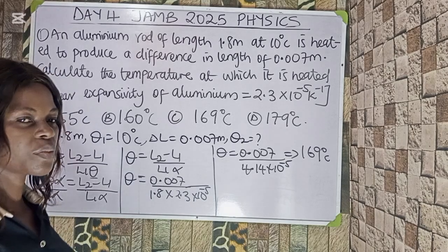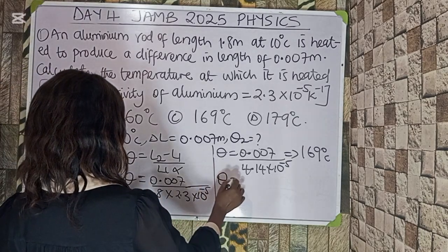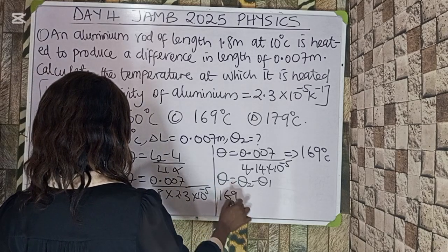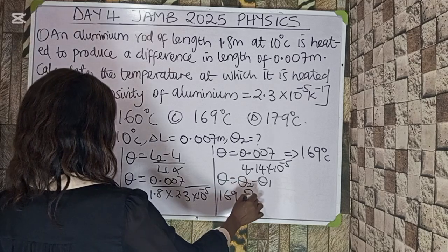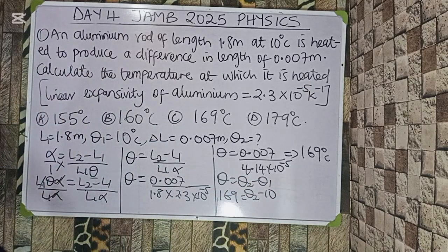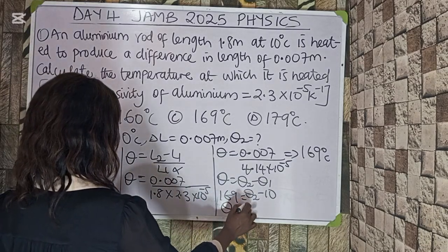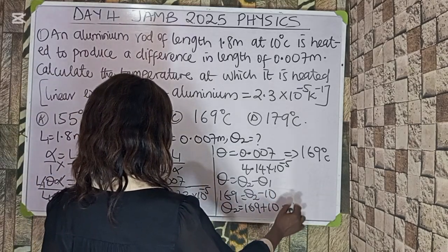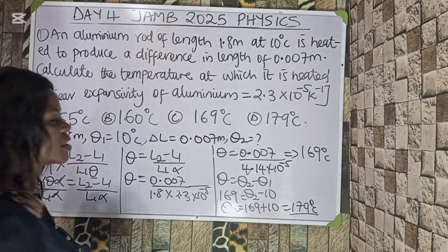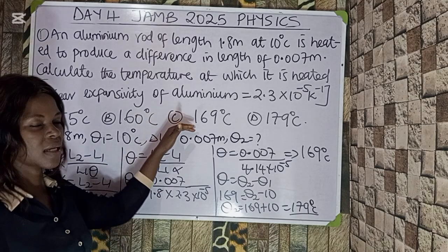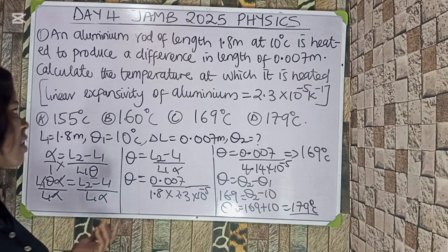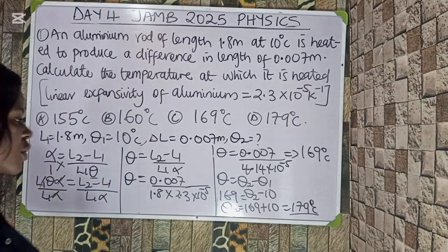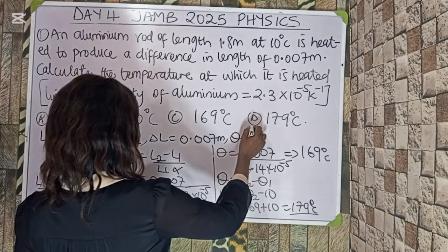To find the actual temperature, we use θ = θ₂ − θ₁. So 169 = θ₂ − 10. Therefore the new temperature is 169 + 10 = 179 degrees Celsius. Some of you might end up with 169, but that is not the final answer, because the question asks for the temperature at which it is heated — meaning you need the final temperature. The correct answer is option D.